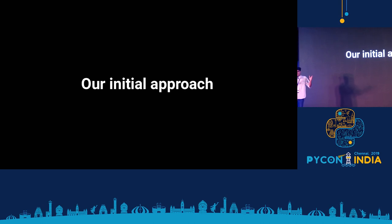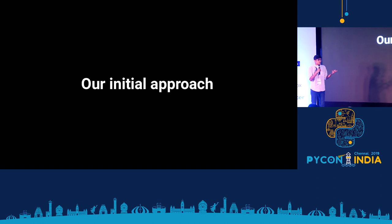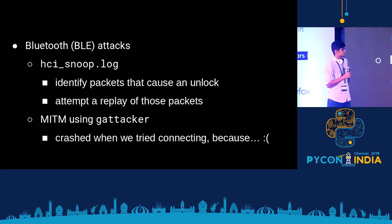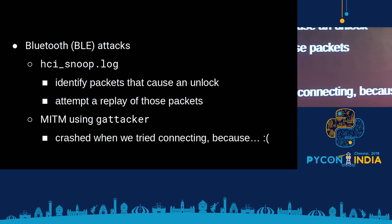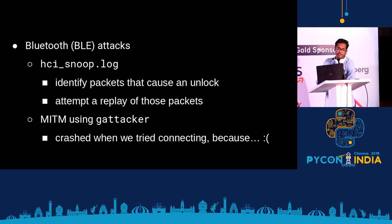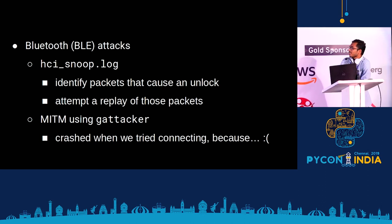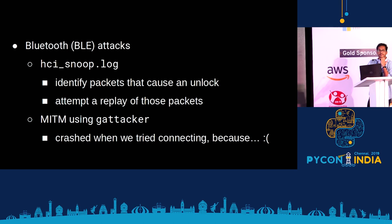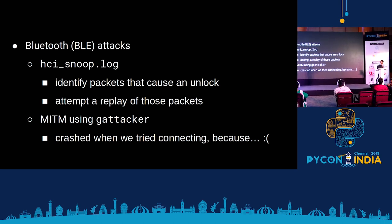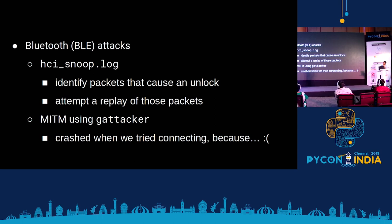Let's talk about our initial approach. When we were presented with the lock it was a black box, so we're going to give you an idea of how we approached it from a hardware security research perspective. The first surface we explored was Bluetooth, because as hardware researchers we tend to go to the easiest surface. We tried to get a dump of our Bluetooth communication between our mobile phones and the lock and replay the packets. Android has an HCI dump log which you can grab by enabling it in developer options — that's what we did. We turned on the dump, grabbed these packets as the app and lock communicated, identified what packets caused an unlock, and attempted to replay those packets, but that didn't really work.